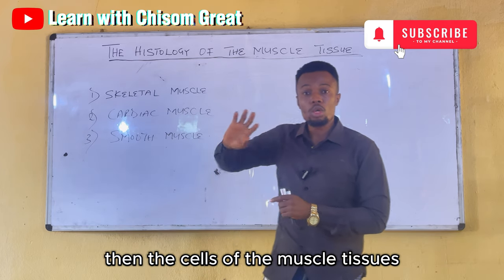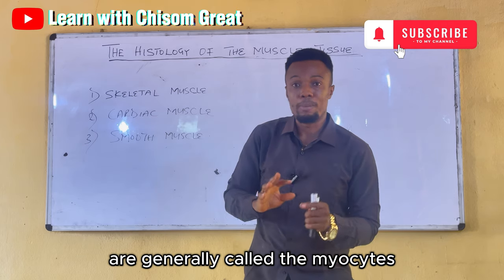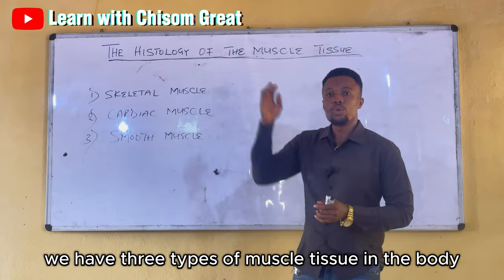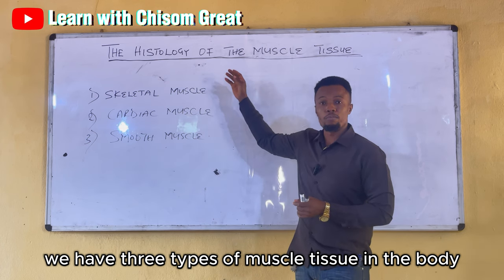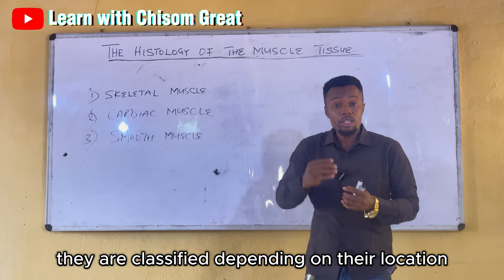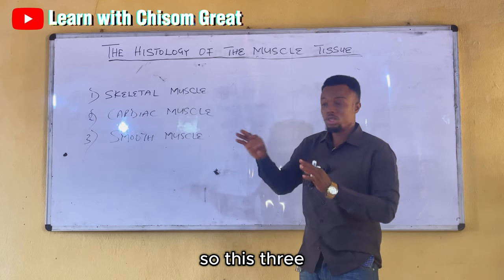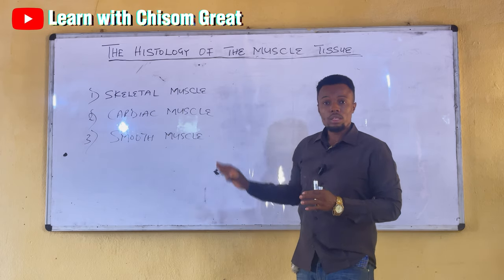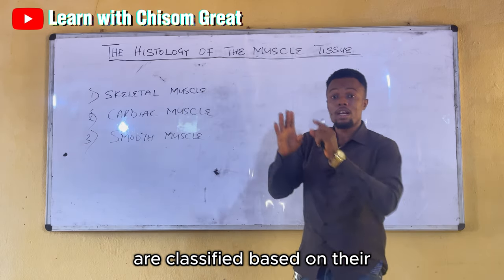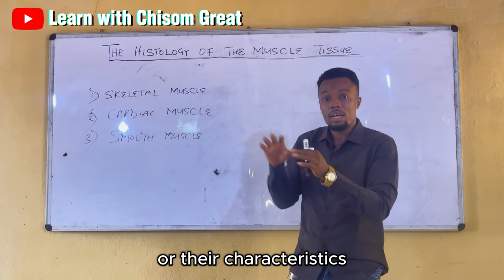The cells of the muscle tissues are generally called the myocytes. We have three types of muscle tissue in the body, and they are classified depending on their location and also their characteristics.